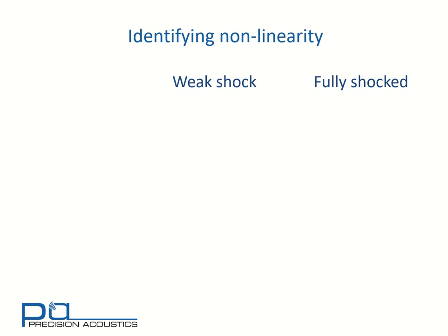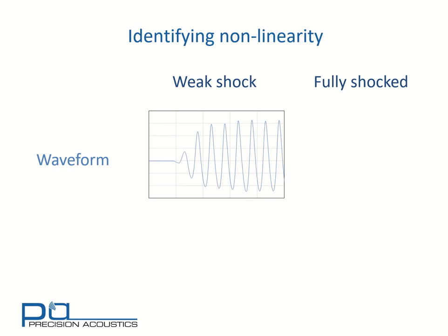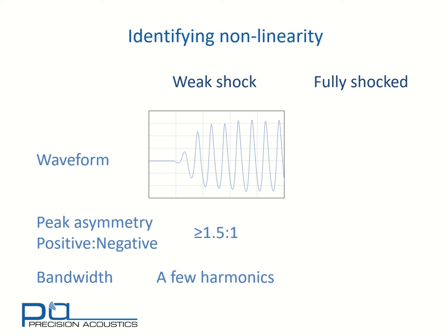It's also useful to be able to look at waveforms and identify whether we have nonlinearity that's present. For simplicity's sake, I will define this as a simple weak shock situation and a fully shocked waveform. Looking initially at the temporal waveform, we notice that in the weak shock situation, we do have a little asymmetry between peak positive and peak negative, but it's typically only of the order of 1.5 to 1, or perhaps a little more. Below 1.5 to 1, it may be difficult to accurately determine whether we've got nonlinearity or not, simply due to uncertainties in our measurement. However, by the time we look at the bandwidth, we can see that there are a few spectral harmonics that have arisen from this waveform distortion that we're starting to notice.